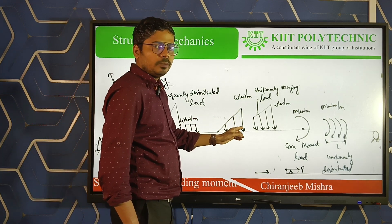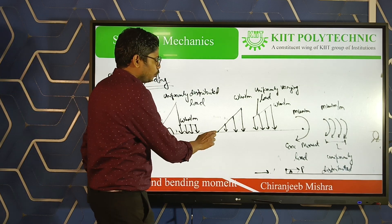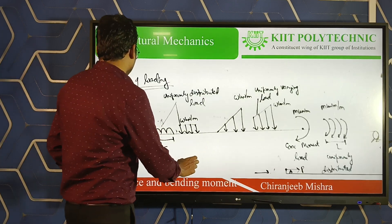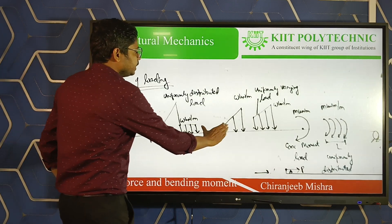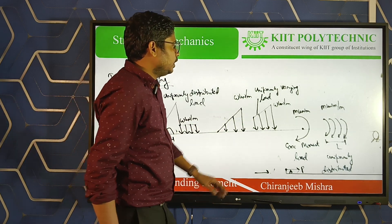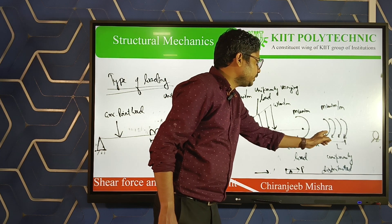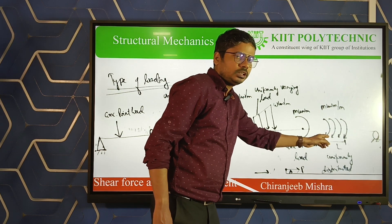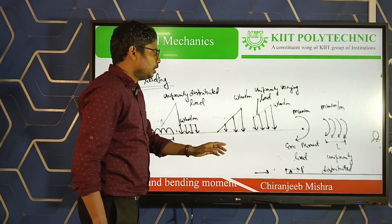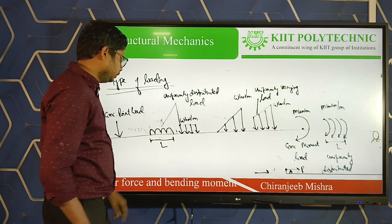The next type is uniformly varying load. At one point the load is zero and it increases constantly — that is uniformly varying load. There is also concentrated moment. These are the types of loads we will be dealing with in this course.